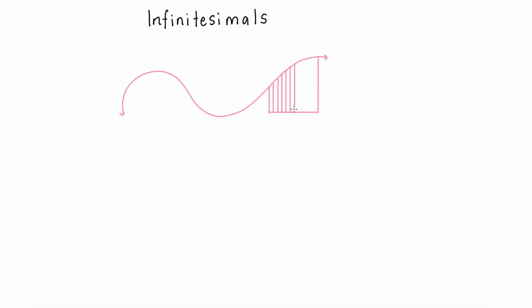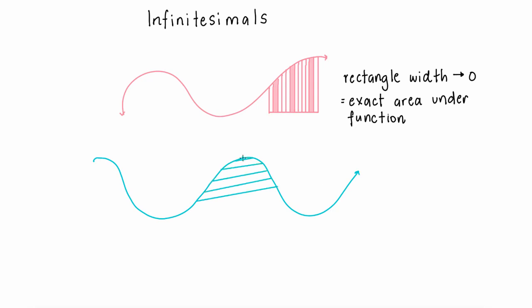Infinitesimals for Leibniz were small quantities such as the tiny rectangles and the tiny gradient values of the secant eventually approaching zero. They are so small in fact that there isn't any way of measuring them. Later on, mathematicians would describe this as a limit.